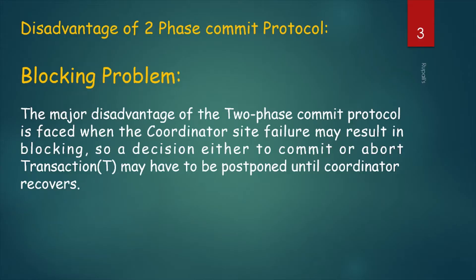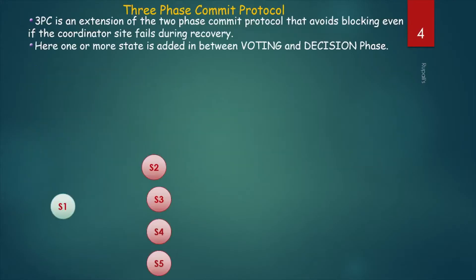Let us learn the 3-phase commit protocol. The 3-phase commit protocol, that is 3PC, is an extension of the 2-phase commit protocol that avoids blocking even if the coordinator site fails during recovery. One or more states are added in between the voting and decision phases.